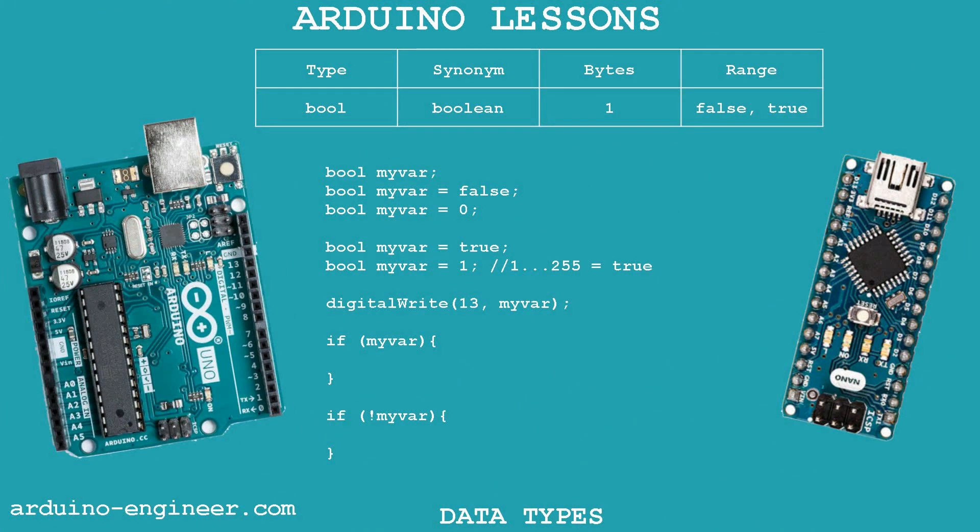The bool data type is used for boolean variables that store two possible values – true or false. Such variables are useful for creating software flags or latches to store the state of a discrete input – for variables that must answer questions like yes or no, on or off.